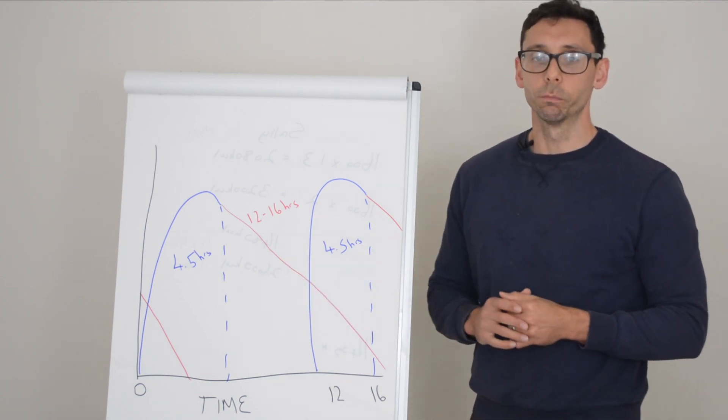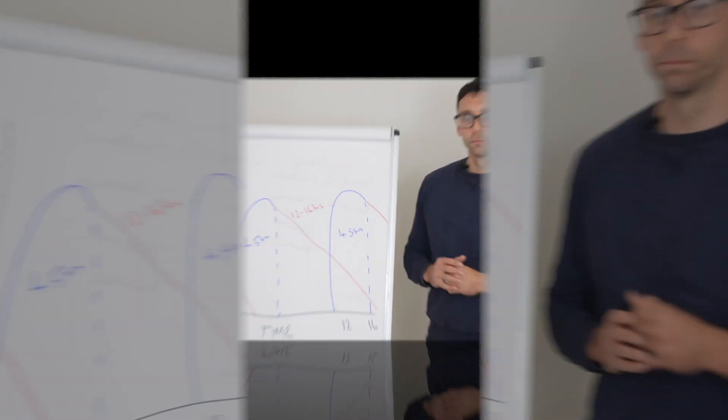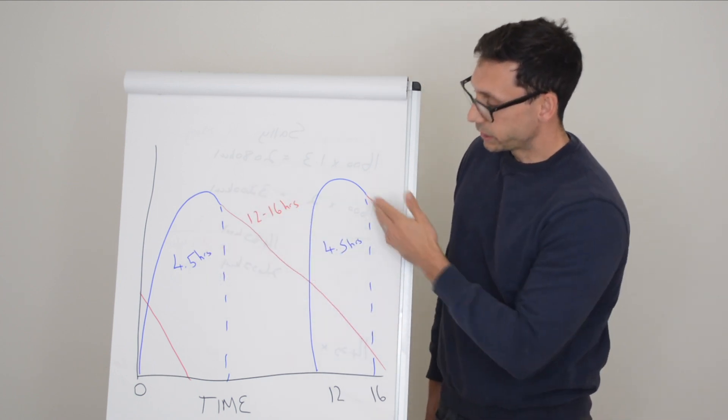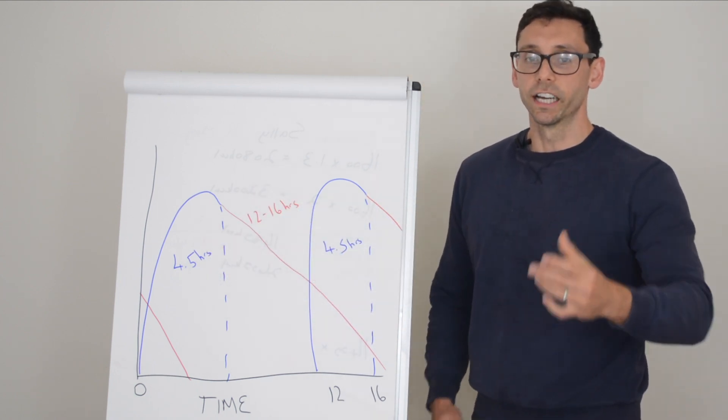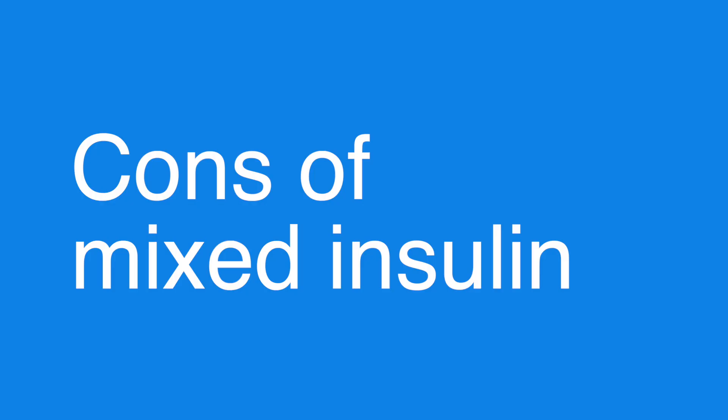Compared to something like a basal bolus regimen where you could be taking four or more injections a day, it can also offset the rises seen by food but also give you that insulin coverage that you might need later in the day. So as I say, it's quite a robust insulin in that respect.